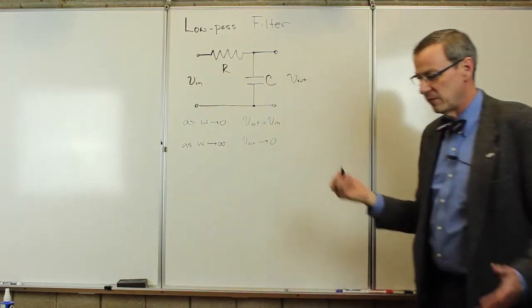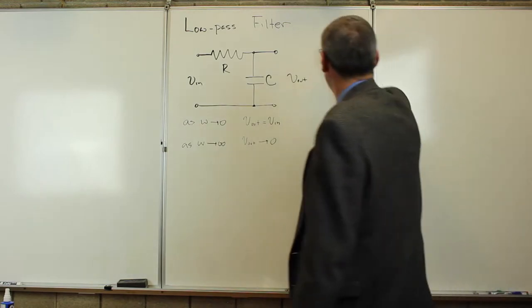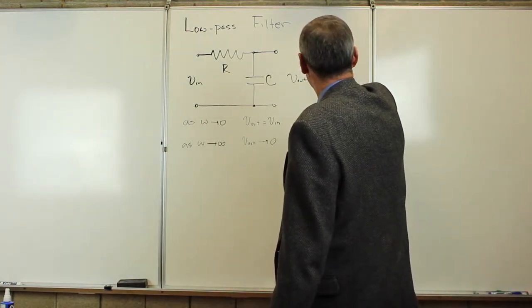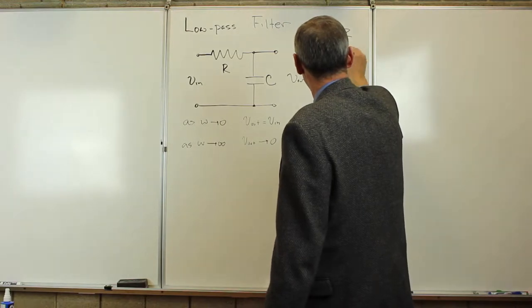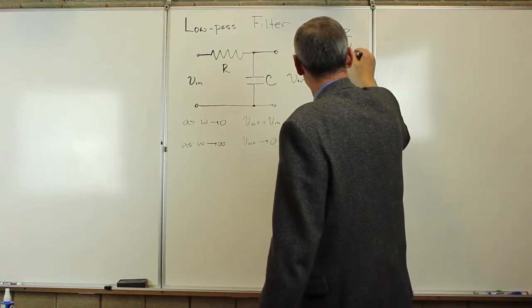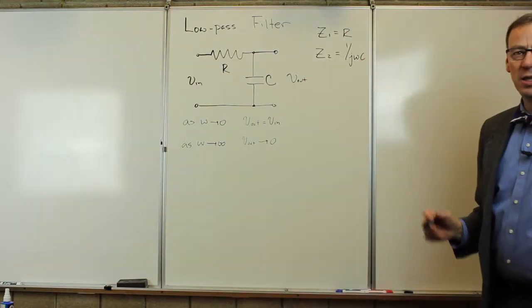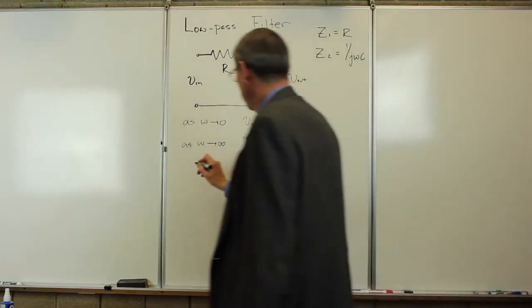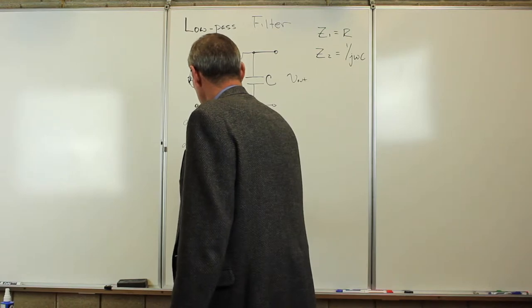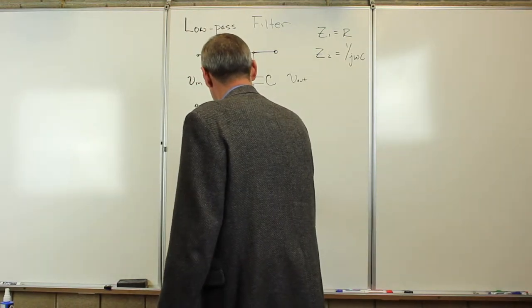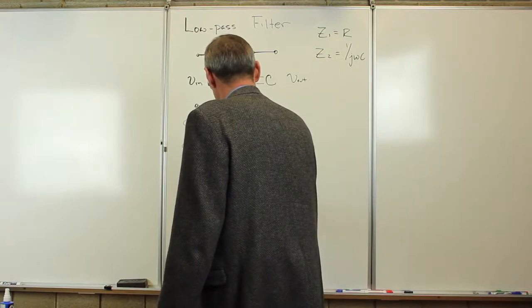So there's the idea of a low-pass filter. Let's now put in Z1 equals R and Z2 equals 1 over J omega C. We can start with the gain of this circuit. The gain is just from our voltage divider equation: Z2 over Z1 plus Z2.